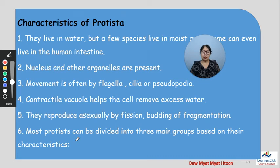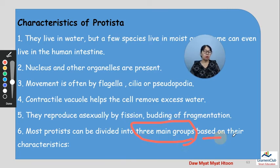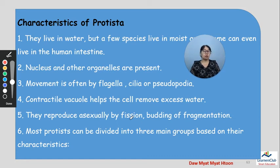Number six: most Protists can be divided into three main groups based on their characteristics. These groups are defined by the characteristics of the Protists.